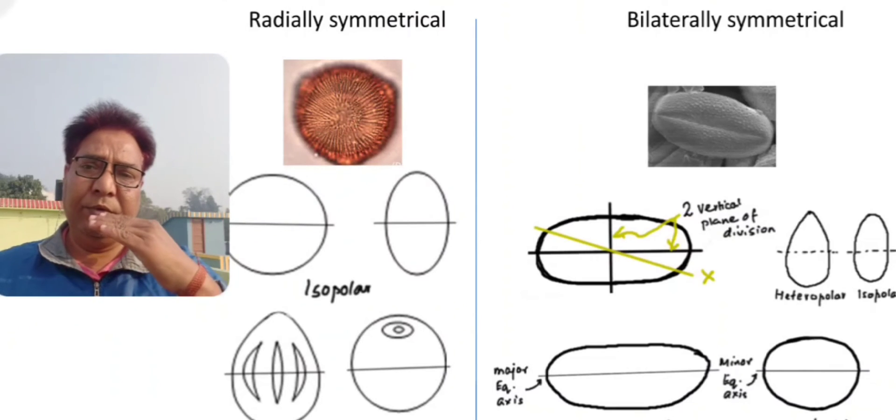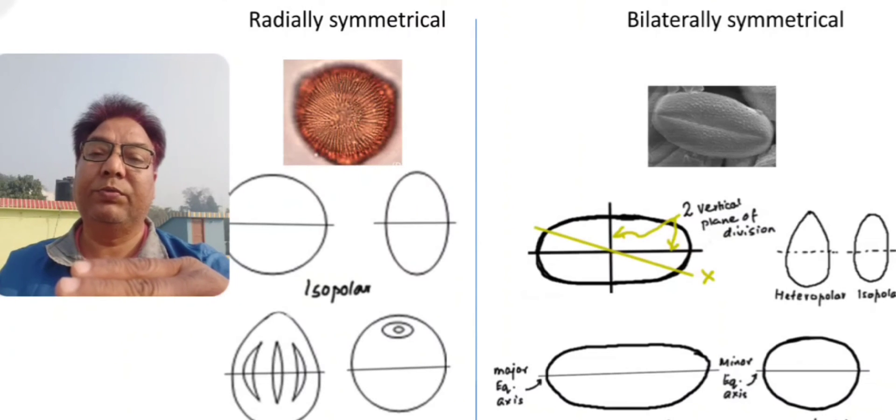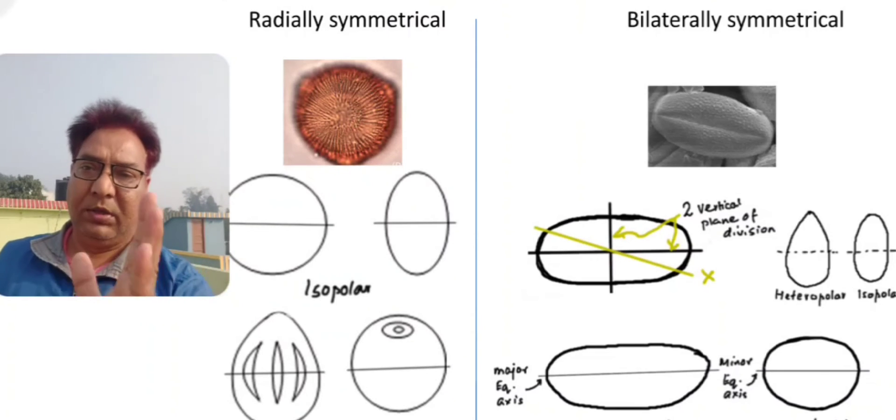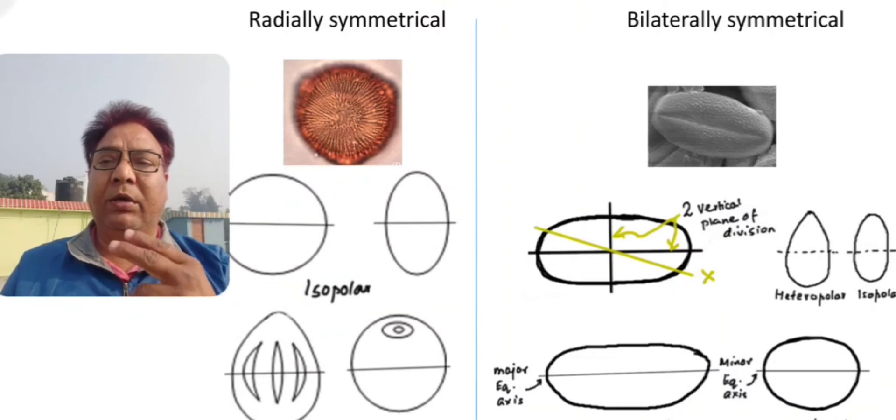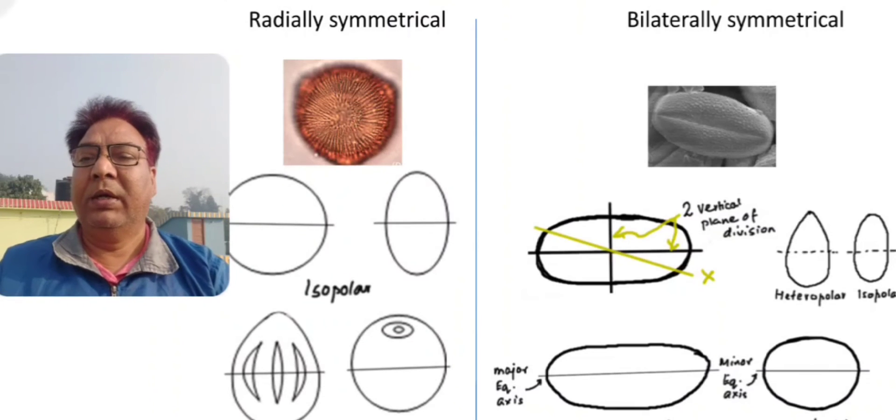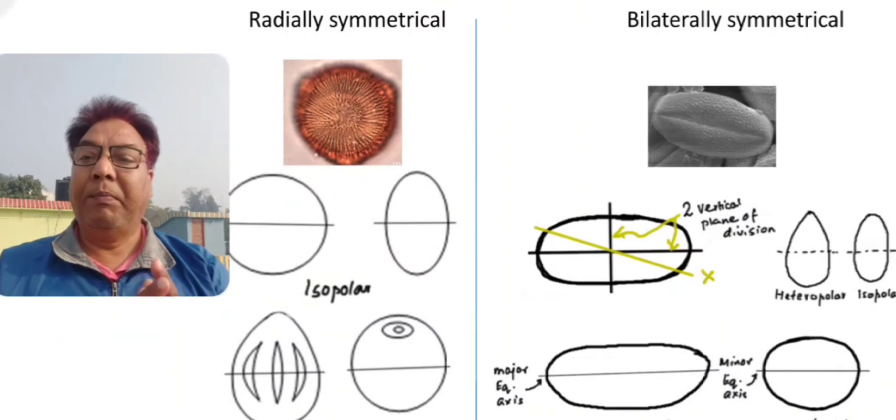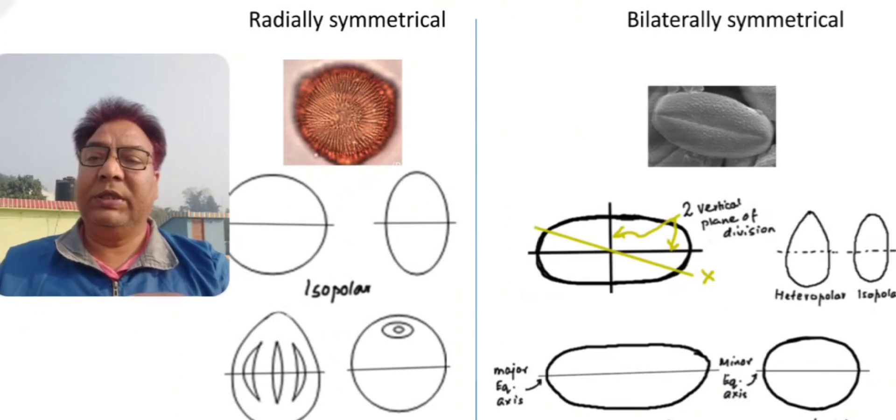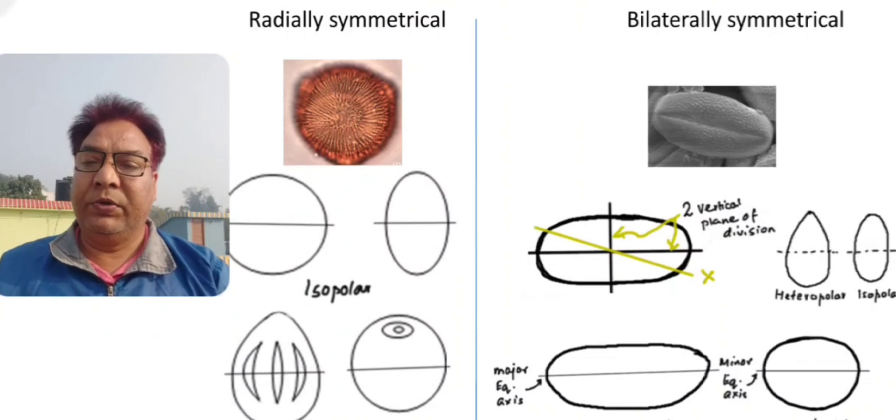In the polar view, you can see this is the vertical plane of division for this. If you are going like this, you will produce one equal half, mirror images of each other. You can go like this producing another. That has been shown by the hand-drawn diagram here, that you can have only two vertical planes of divisions. As far as polarity is concerned, you have two situations. Either it will be isopolar bilaterally symmetrical or bilaterally symmetrical heteropolar. These are the symmetries of spores or pollen grains.